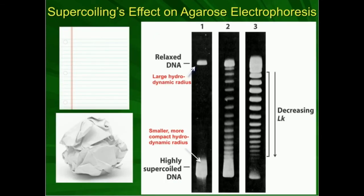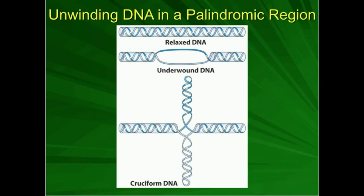That's enough on supercoiling for this video. In the next video, we're going to talk about how supercoiling affects things in the lab. For example, when we electrophorese DNA in an agarose electrophoresis experiment, relaxed DNA does not travel as far through the gel — it travels much more slowly than highly supercoiled DNA. Make sure to like this video and subscribe to the channel for future videos and notifications.